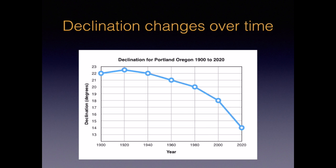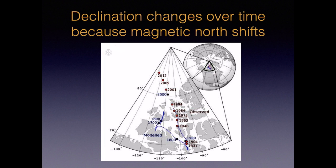Why? Because declination changes over time. Here we see that declination has changed dramatically over the last 100 years in the Pacific Northwest. If you were using a topo map printed in, say, 1960, the declination value in the margin would be 21 degrees. But we know that today it's actually closer to 16 — that five degree difference could be enough to cause a navigation error. The reason why declination changes over time is that the location of magnetic north moves, and it doesn't move in a straight line. Here's a map of the approximate location of magnetic north over the last few centuries — you can see it's moved around a lot. So the margin of a map, especially if it's older, is not the best source for the correct declination.